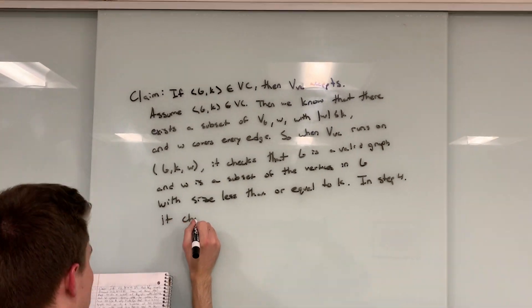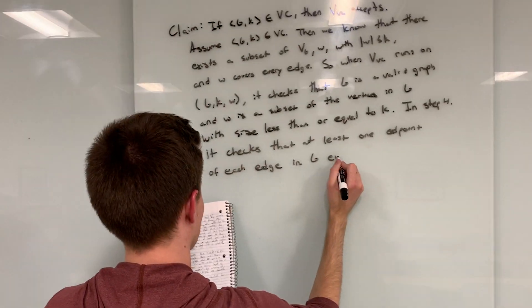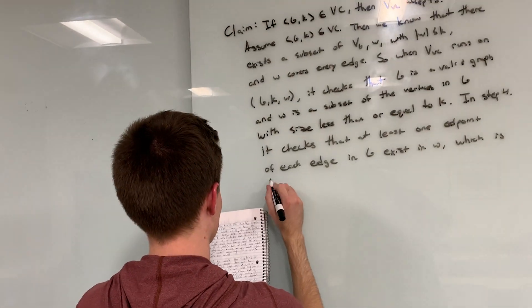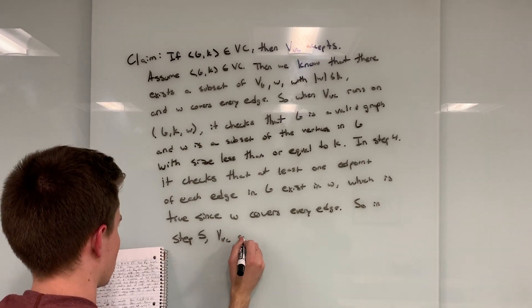As we have discussed, W, which is the total edge covering of G, and whose size is less than or equal to K, we can accept in step 5, as desired. Therefore, the verifier accepts.